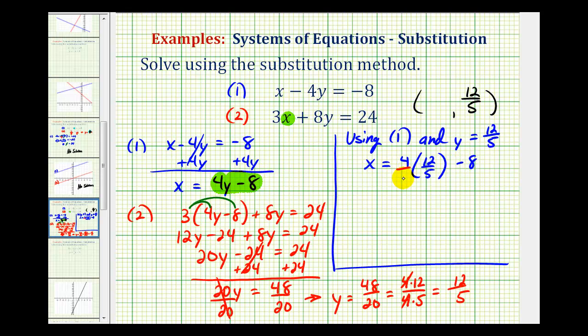So we can think of this as four over one, but nothing's going to simplify here. So we're going to have x equals, this is going to be forty-eight-fifths, minus, then here we can think of eight as eight over one.